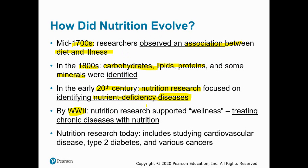By the end of World War II, nutrition research started to shift toward wellness, still looking at treating different chronic diseases with nutrition. Today, in the 2000s, nutrition research continues to include noticing when diseases are related to nutrient deficiencies, treating chronic diseases with nutrition, and studying any of the more abundant diseases and understanding their nutritional relationship. Some of the leading diseases in the United States include cardiovascular disease, type 2 diabetes, and cancers — major focal points of nutrition research in the early 21st century.